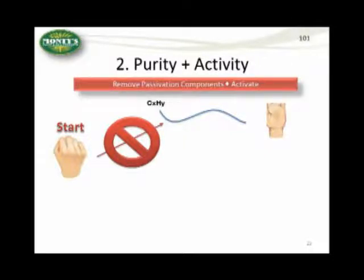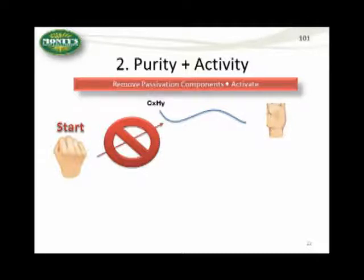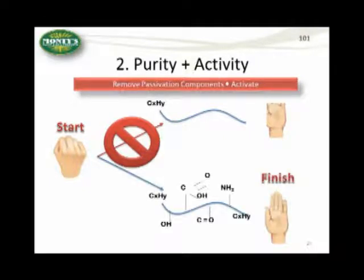The next thing that we do is we remove what we call the passivation components — the things that keep this molecule from being as active as possible. Now, you might hear someone say their humic is completely pure and they've stripped everything out. If they say that, then the functional groups have been stripped out and it's like a hand without fingers — not functionally active. What we do, however, is take out the passivation components but leave in the active parts, the functional groups. You want to purify it, but you don't want to take everything out, because then you're left with a nonactive material.